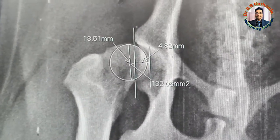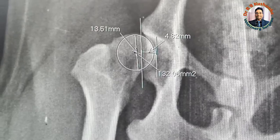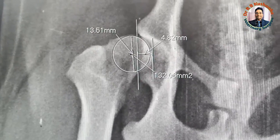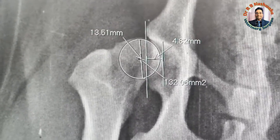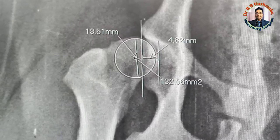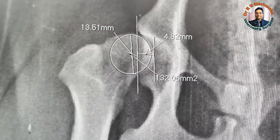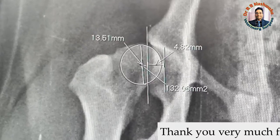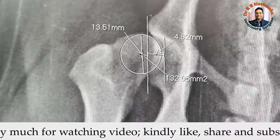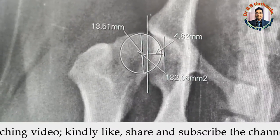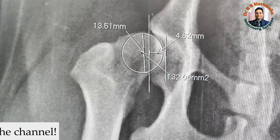The Norberg angle measured was also indicative, being less than 105 degrees. I have already uploaded a video on how to calculate the Norberg angle — I will give the link in the description box. This is how we calculate the femoral head coverage percentage in a suspected case of hip dysplasia. Thank you very much for watching. If you liked this video, kindly share it with your friends and subscribe to the channel if you have not subscribed yet.